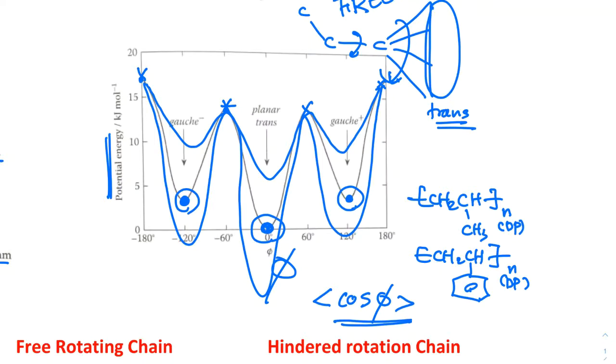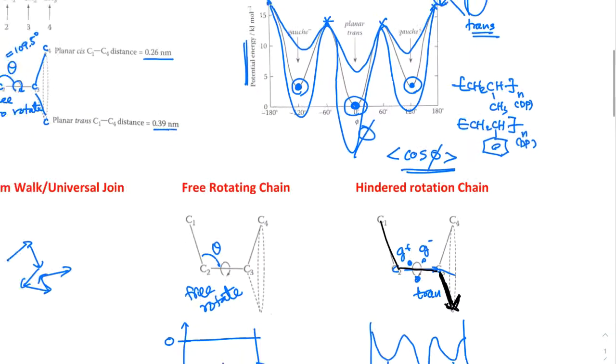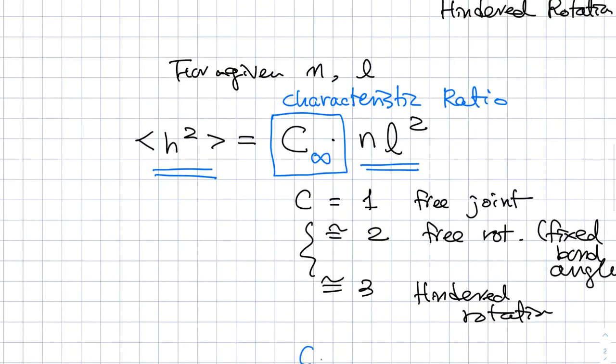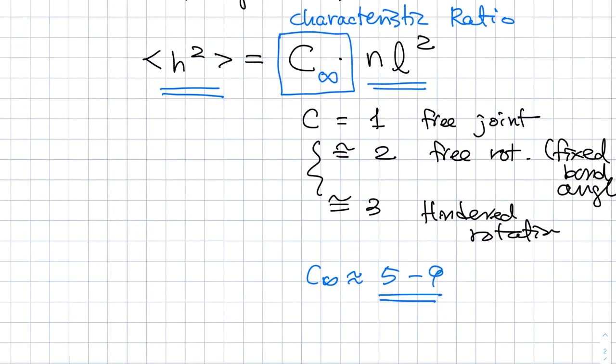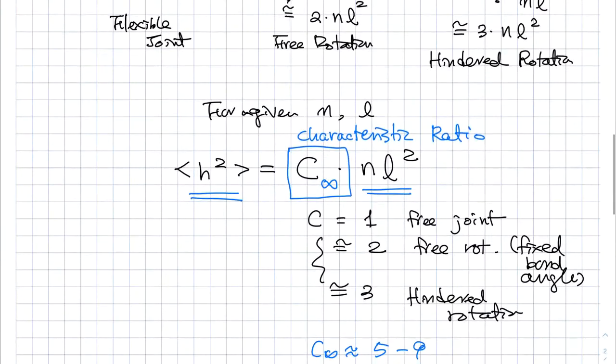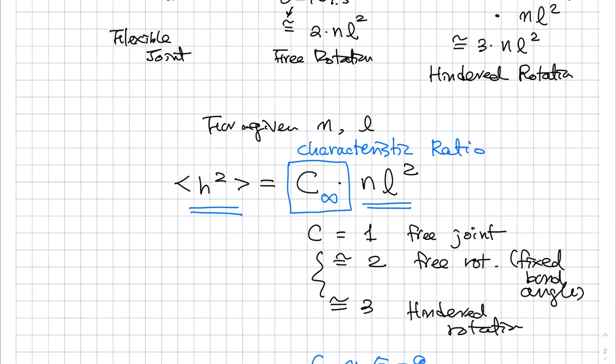And then they're going to change essentially what is called the average value of cosine rotation. So this value, depending on the rotational, hindered rotation energy difference value. And typically C infinity data ranges from 5 to 9 value for many of them. And this is something that we're going to talk about later. But what's a really important message that actually is not characteristic ratio.